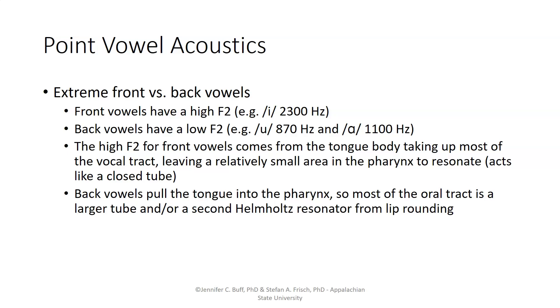Back vowels pull the tongue into the pharynx, so most of the oral tract is open to be a resonating tube. That's a larger tube, so it will have a lower resonating frequency. Or in the case of back vowels that are rounded, there is lip rounding, which will create a second Helmholtz resonator, resulting in a low second formant frequency.